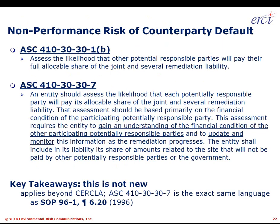Counterparty risk of default is part of ASC 410-30 under FASB, and it's also referenced indirectly today under GASB 49. GASB 49 says you should have a comprehensive life cycle cost forecast. It doesn't say comply with ASC 410-30, because GASB 49 came out before ASC 410-30. But GASB 49 wraps up this obligation inside, and ASC 410-30 says: assess the likelihood that other PRPs will or won't pay their full allocable share of a joint and several liability. This language was out in 1996. ASC 410-30-30-7 is the exact same language as SOP 96-1, paragraph 6.20, which came out in 1996 and in draft form two years before that. This language has been around.